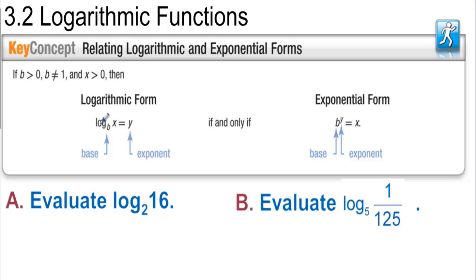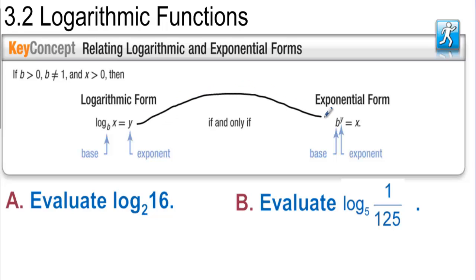Logarithmic form: log base b of x equals y. Here b is the base, and logs always equal the exponent. So if we have log form, we should be able to convert it to exponential form, where b is the base, y is the exponent, and this equals what's left over, which is x.